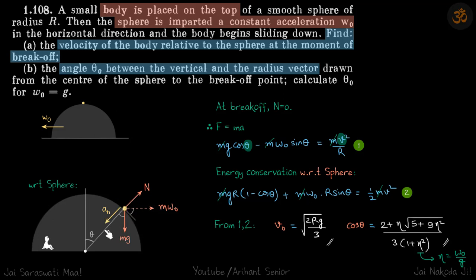F is equal to ma. The normal force is mg cos theta minus n which is zero minus m omega naught sine theta, equal to its normal acceleration mv square by r. This is our first equation where we related theta and velocity.